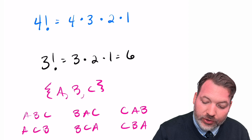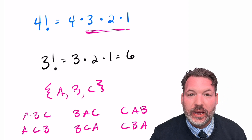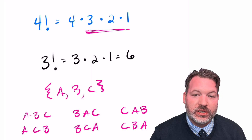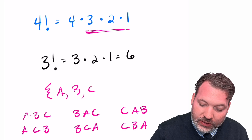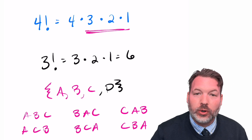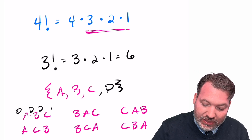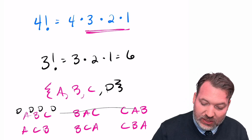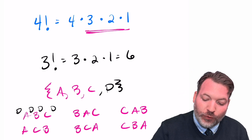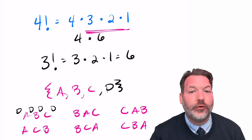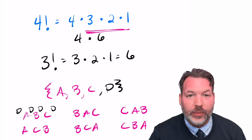This also gives us a great way to understand just why 4 factorial is the same as 4 times 3 factorial. For every single one of these arrangements of A, B, C, if I added on a fourth element D, all I have to do is pick one of four different places that D could go. So I've got six different arrangements, any one of which could have four different placements for D, and it's that 4 times 6 — or 4 times 3 factorial — that gives me back the 24 different ways to arrange four elements.